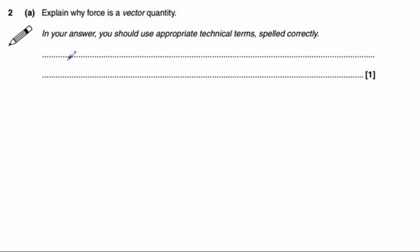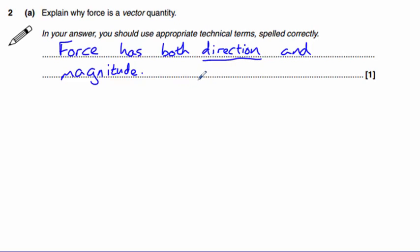The answer here, explain why force is a vector quantity, it's because force has both direction and magnitude. According to the mark scheme, it's the word direction that they're actually looking for to be spelled correctly here.